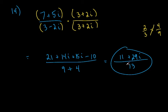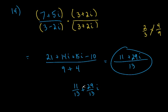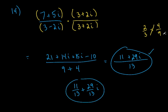I'm perfectly fine if you leave the answer like that. But some teachers in the future may want you to write it as 11/13 plus 29i/13 — same common denominator, just split into two fractions. Either way, this is how the book does it. I'd be fine either way.